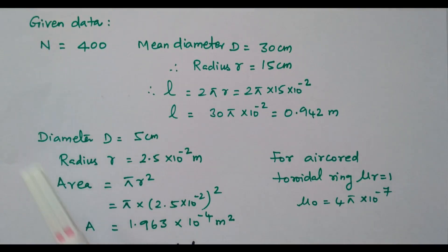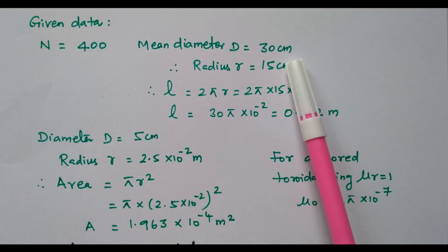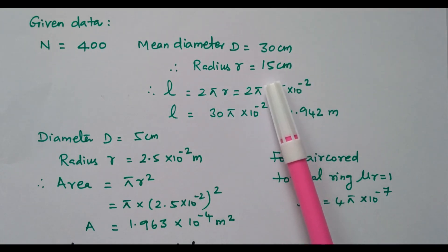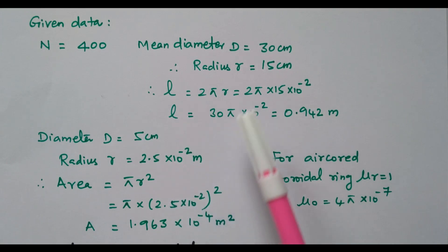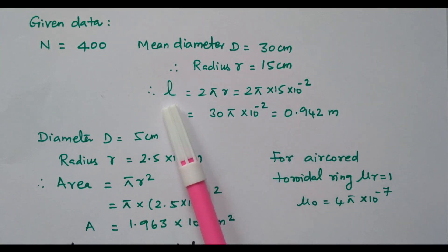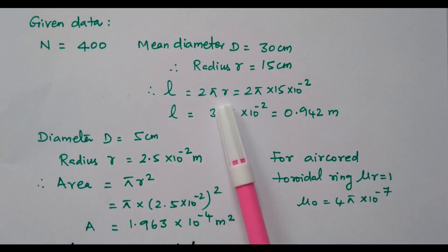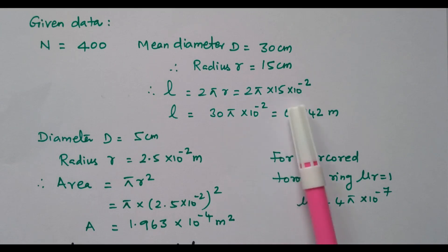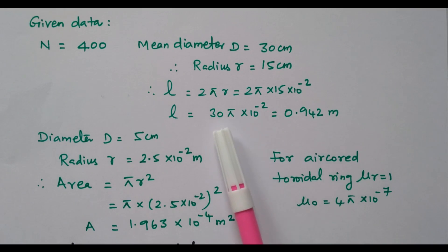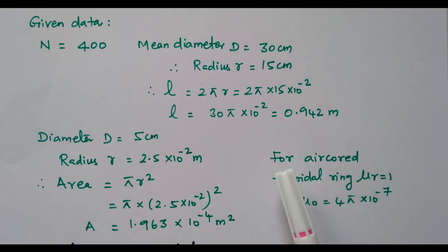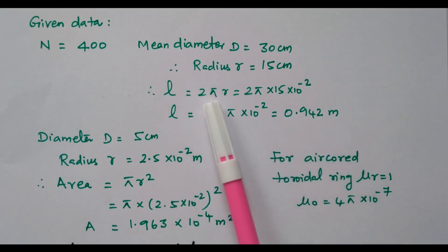The number of turns is 400. Mean diameter given is 30 centimetre, so the radius equals 30 divided by 2, which is 15 centimetre. From this radius we can find the length of the magnetic path — the length is the circumference of the ring. So 2πr = 2 × π × 15 × 10⁻² = 30π × 10⁻² = 0.942 metre. The length of the magnetic path is 0.942 metre.